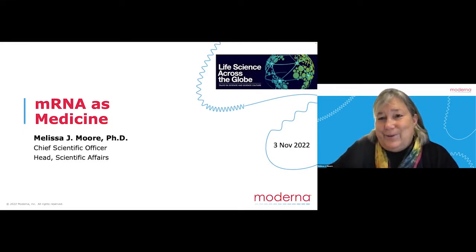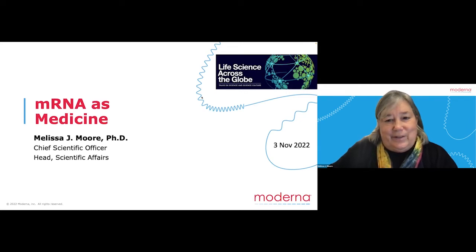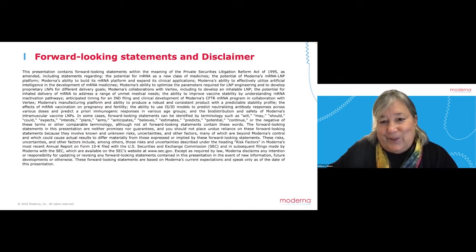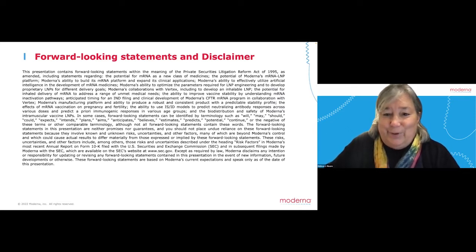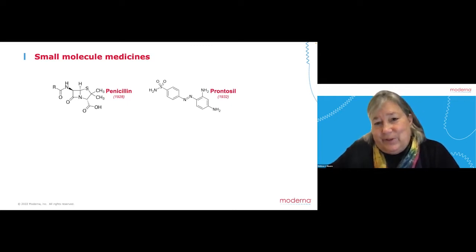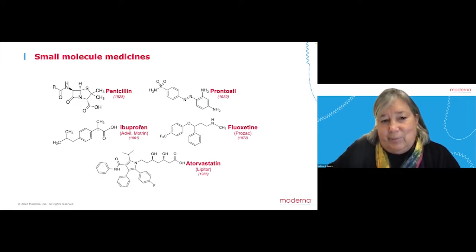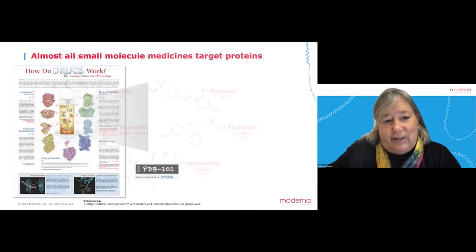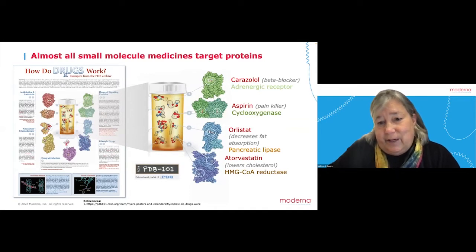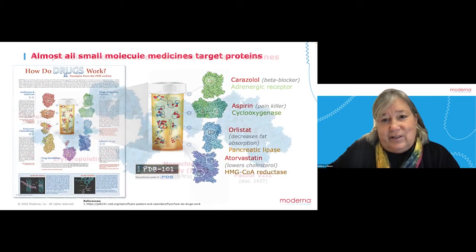Thank you, Thomas, for inviting me. I'm really happy to be here to share some of our research on mRNA medicines. The kinds of molecules Ross was telling us about were small molecule medicines, which have evolved over less than 100 years — starting with penicillin and prontosil, the first antibiotics. The vast majority of these small molecule medicines interact with and modulate the activity of proteins. Another class of medicines that has emerged is proteins themselves, often called biologics. The first biologic discovered was insulin in 1921 at the University of Toronto.